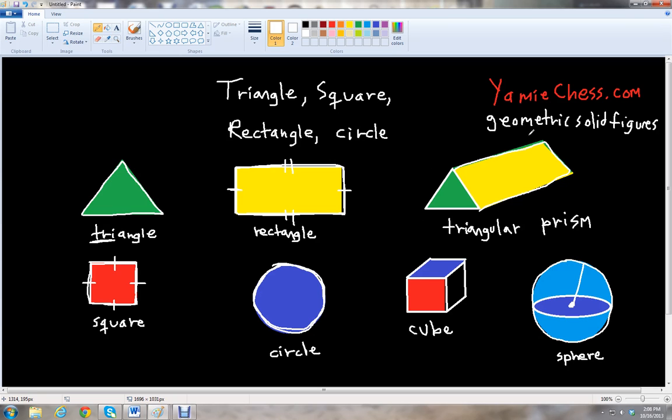Now if we look at our geometric solid figures, we notice that we can form these figures using one or more of the four basic shapes that we just talked about. So like for example, the triangular prism can be formed using the triangle and the rectangle. So the triangle is formed in the front and the back, and then the sides are formed from the rectangle.